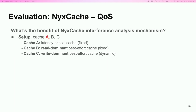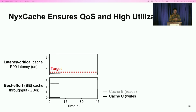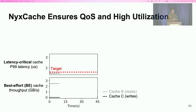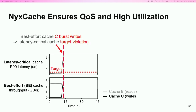To demonstrate the benefit of this new mechanism, we show again a quality of service policy setup, but a more concrete one. Cache A is the latency-critical cache and B and C are best-effort caches. We set B as read-dominant and C as write-dominant. In the top figure we plot the latency-critical cache's tail latency over time, with the red line indicating the latency target we must meet, and in the bottom figure we plot best-effort cache throughput over time. Initially cache B has read traffic around 2 GB/s while cache C is very light. Then we change cache C to generate bursty writes at 13 seconds, and this is when we notice the latency-critical cache is failing its latency target.